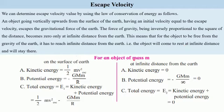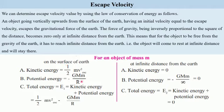Let us calculate it for an object of mass m on the surface of the Earth. When the object is on the surface, kinetic energy equals ½mv², where v is the escape velocity. Potential energy is −GMm/R. We are not adding height h here since the object is on the surface, so height is zero. Here capital M is mass of Earth, small m is mass of object, and capital R is radius of the Earth, and we use a negative sign.